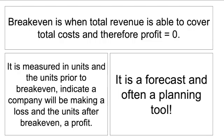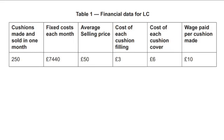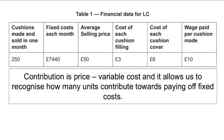What if I change the selling price? What happens if I get cheaper supplies? How is that going to have an impact on my breakeven? Now to calculate breakeven, we can do it from the financial data used in the first video. You need to work out the contribution first. The contribution formula is simply: price minus variable cost per unit. It allows us to recognise how many units contribute towards paying off fixed costs.